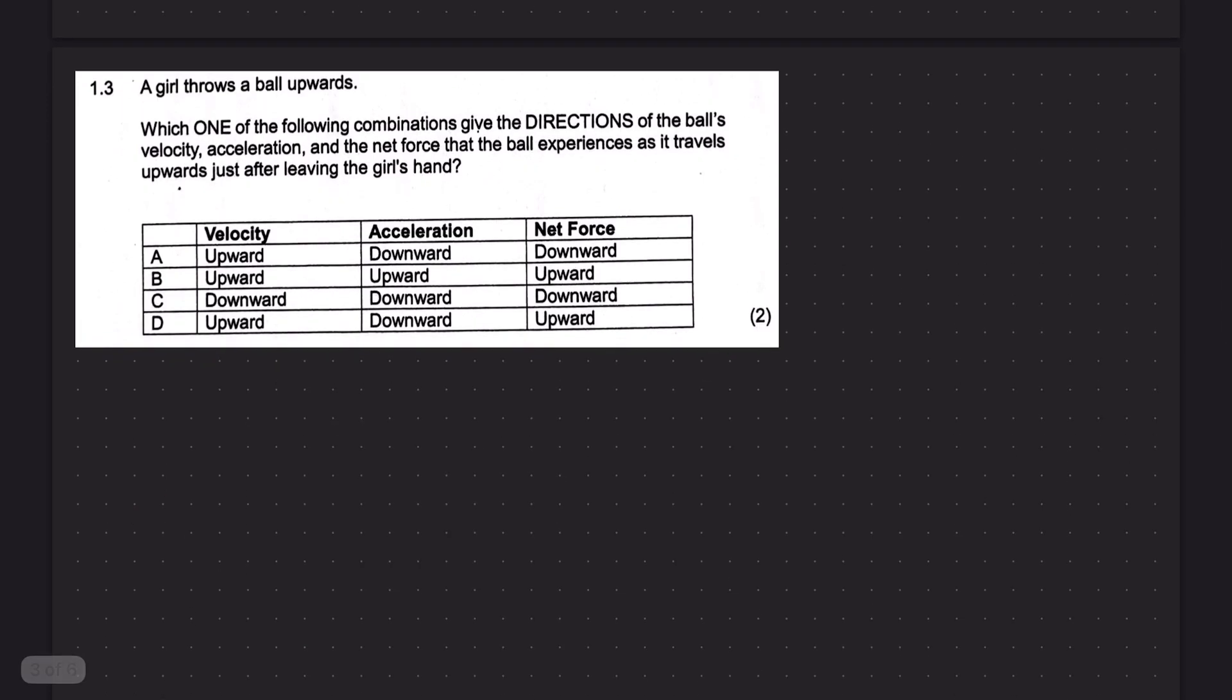Question 1.3. A girl throws a ball upward. Which one of the following combinations give the directions of the ball velocity, acceleration, and net force that the ball experiences as it travels upward after leaving the girl's hand? So we can do this quite easily if we draw a free body diagram for the ball once it's in the air.